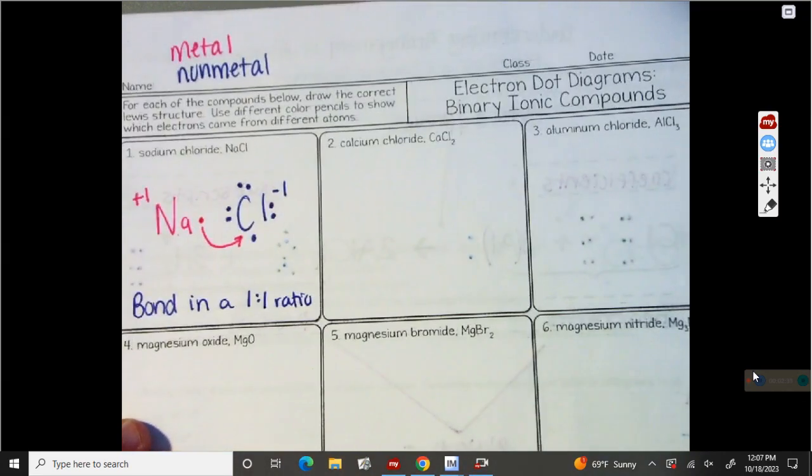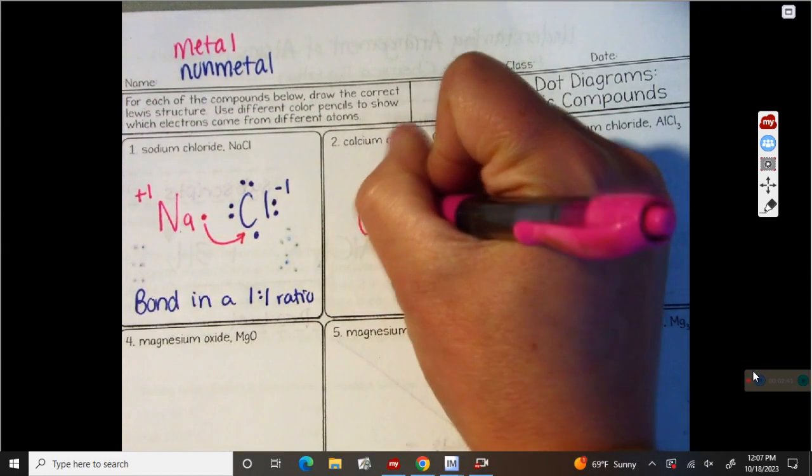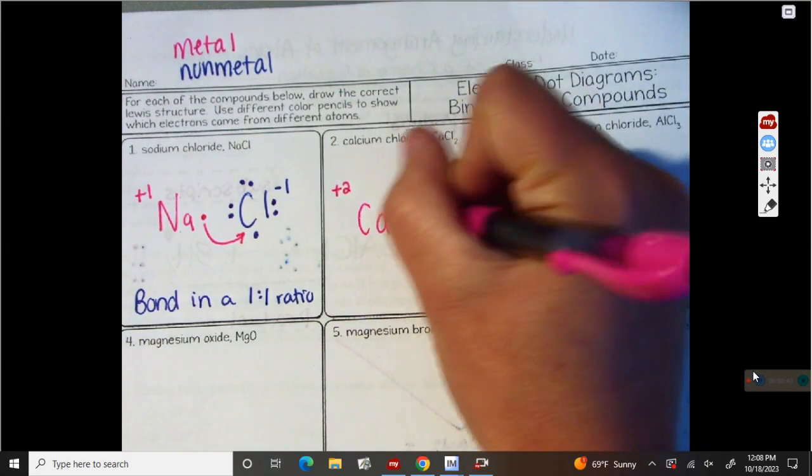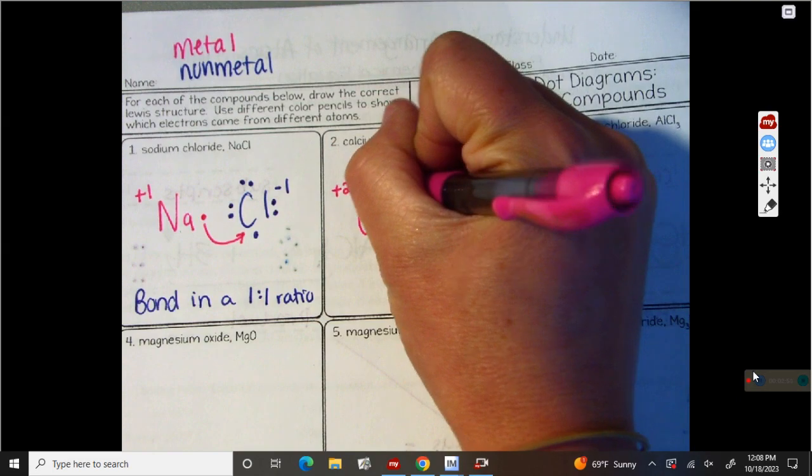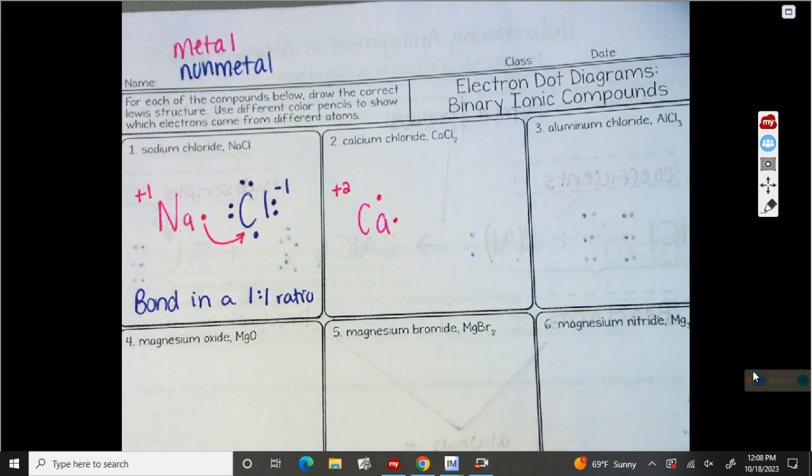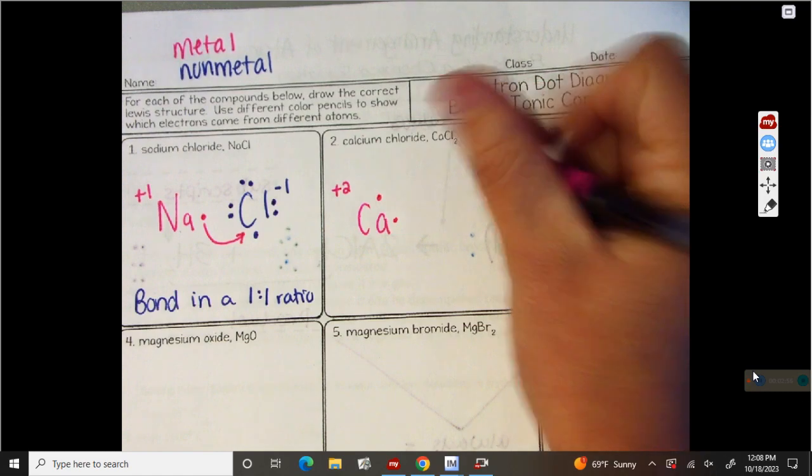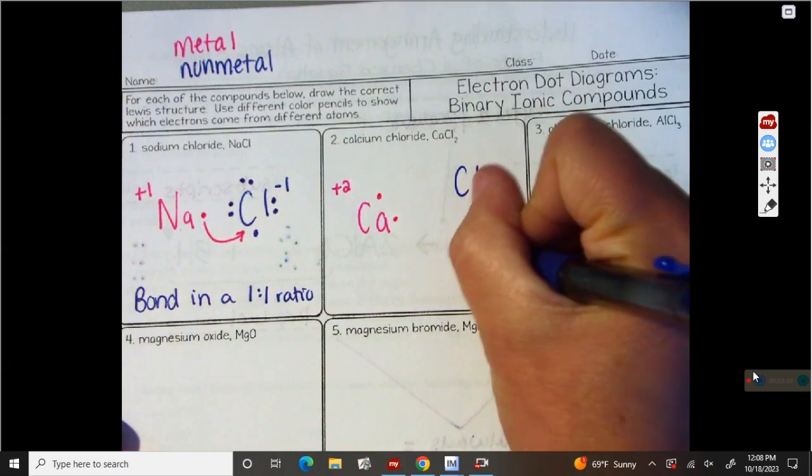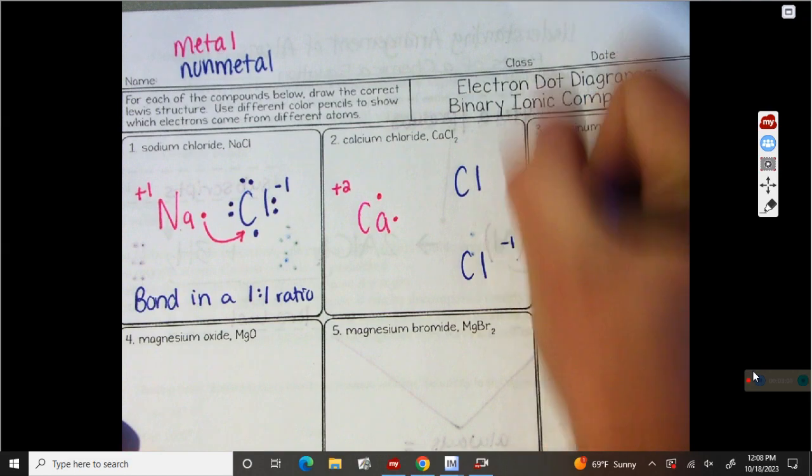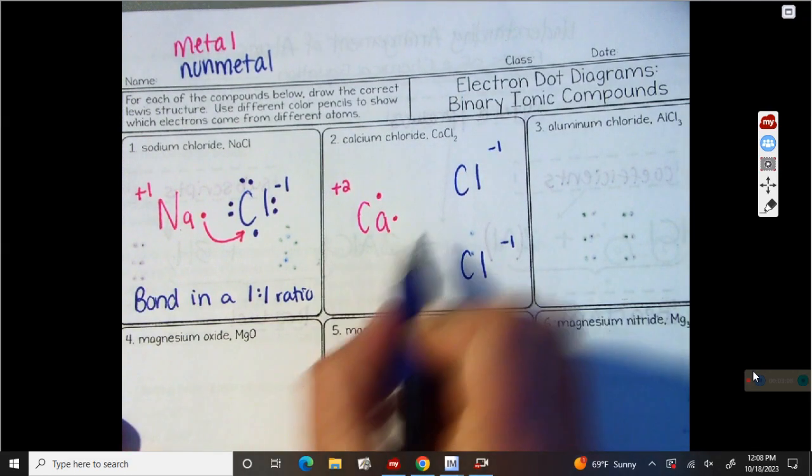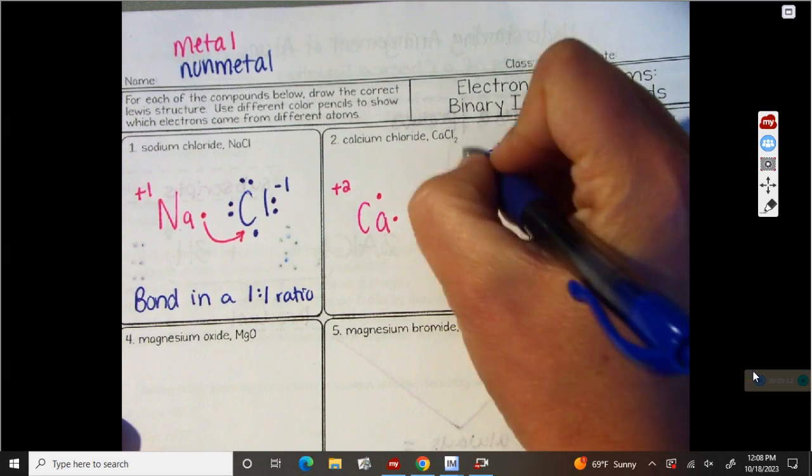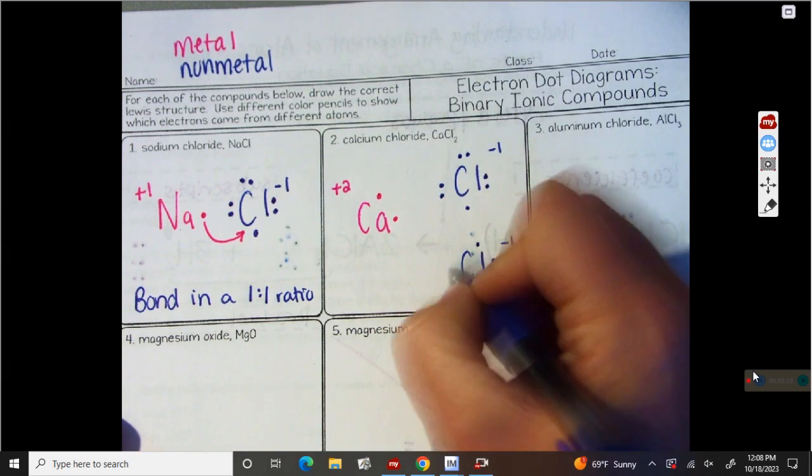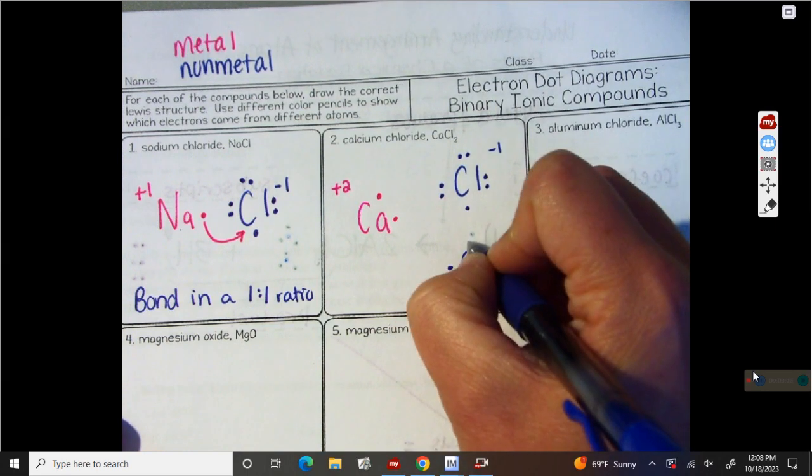Let's look at calcium chloride. Calcium is Ca and it has a positive two charge. It's in group two. So it has one, two valence electrons. Chlorine, it says we have two of them. So I need to draw two. I'm going to get my non-metal color and I'm going to draw two chlorines. Chlorine has a negative one charge and it also has seven valence electrons. So one, two, three, four, five, six, seven. One, two, three, four, five, six, seven.